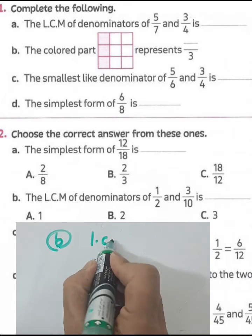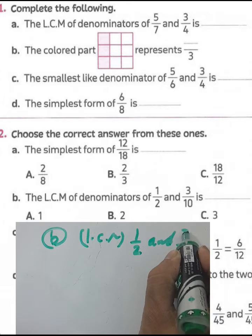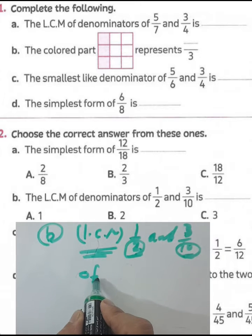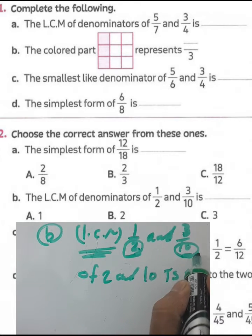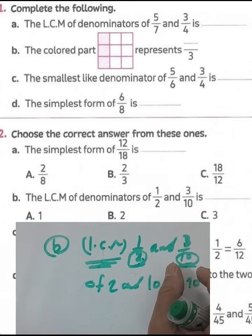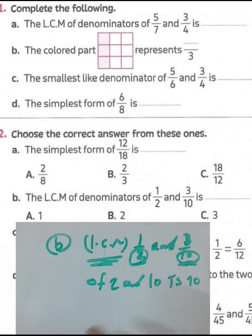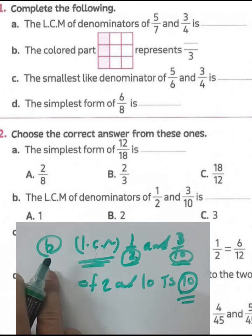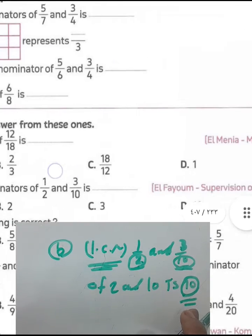Question letter B: find the least common multiple of the two denominators of one-half and three over ten. We know ten can be divided by two. When the greater number can be divided by the smaller, the greater number is the least common multiple and the smaller is the highest common factor. So the least common multiple of two and ten is ten. The answer for letter B is ten.